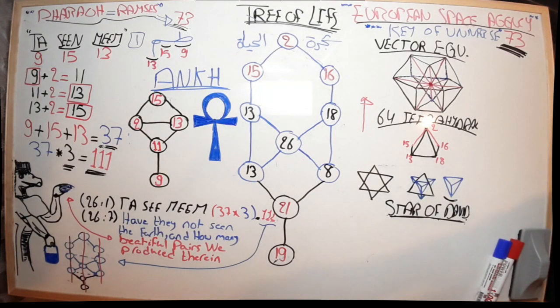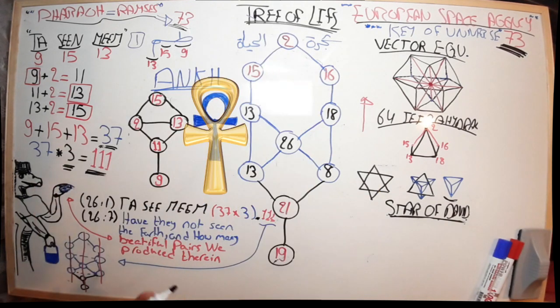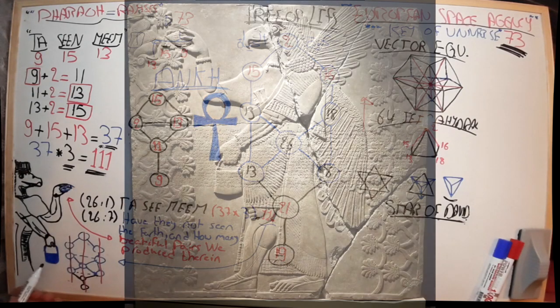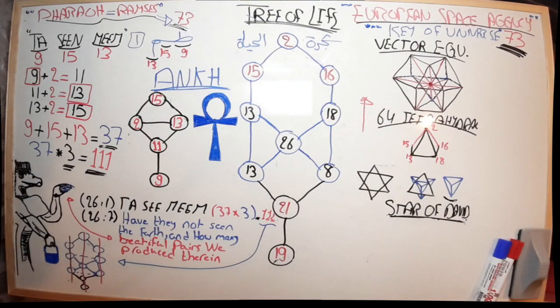Welcome back to another part of the series where we are decoding the Tree of Life, the Ankh, the bag, the gods holding, and of course the Great Giza pyramid, which we will talk about in the next video. But before we speak about the Great Giza pyramid, which is very important, I wanted to continue with the encoding of the Ankh.